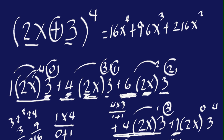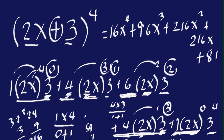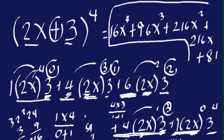Down here we have 27 for 3 cubed. Now 27 times 2 is 54, and 54 times 4 is 216. So plus 216x. The last term: 2x to the 0 is 1, times 3 to the 4th which is 81. So this is our final expansion for 2x plus 3 to the 4th power.